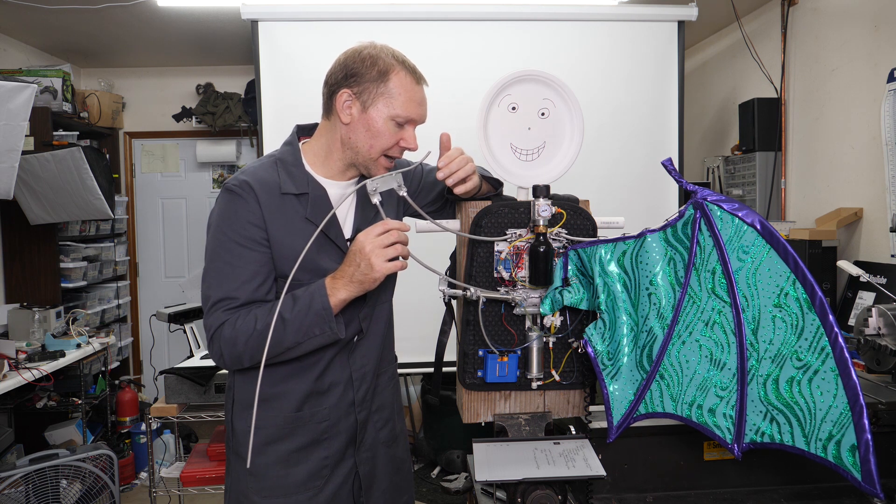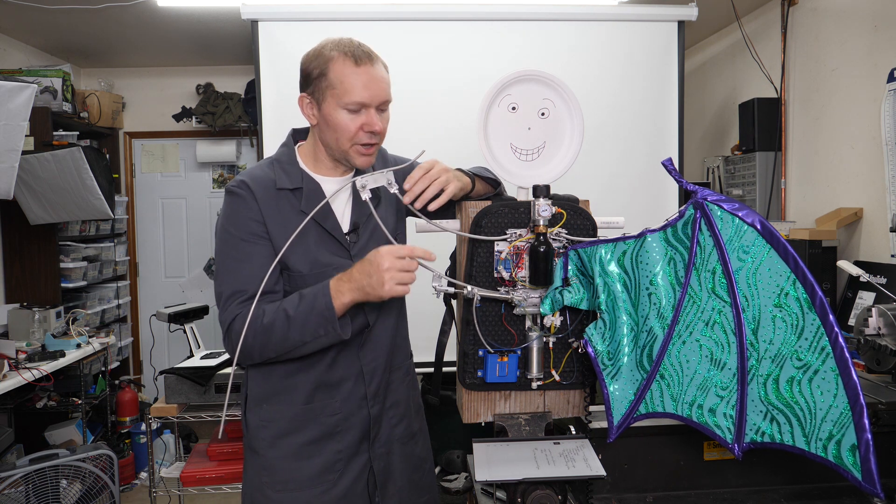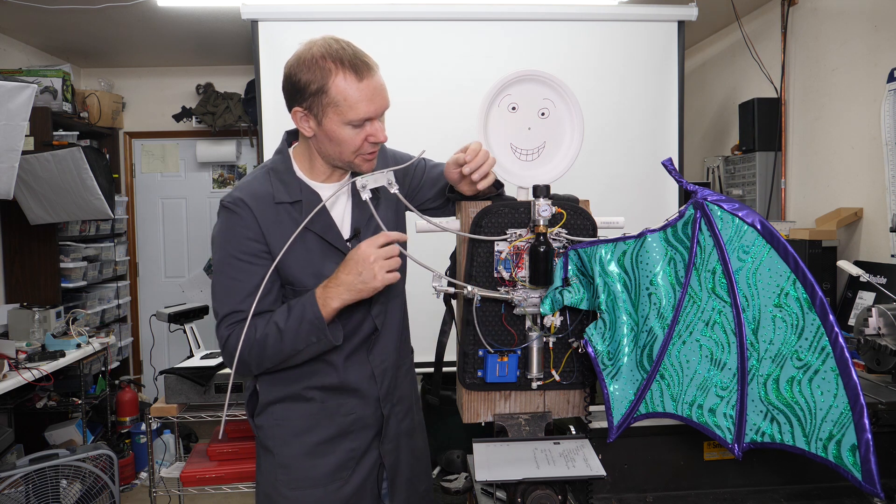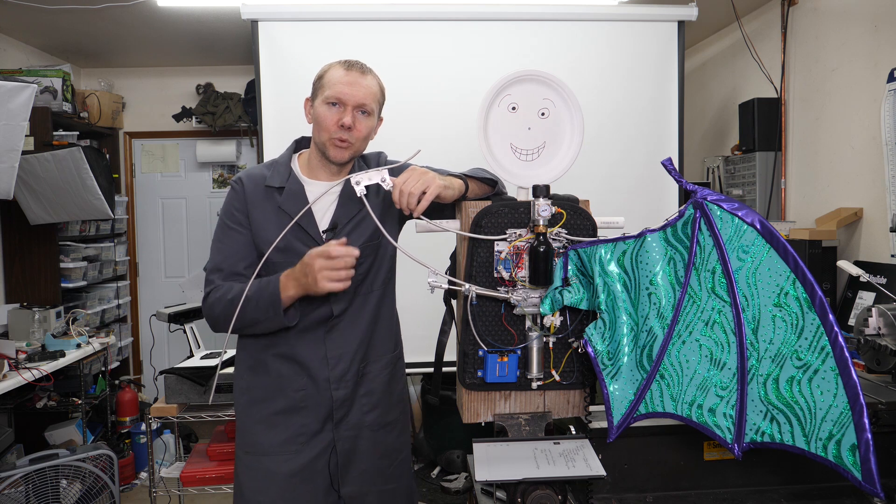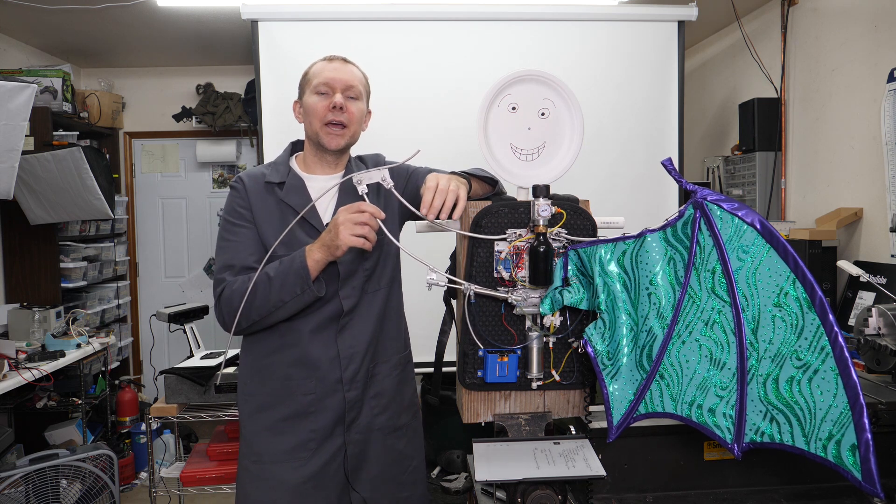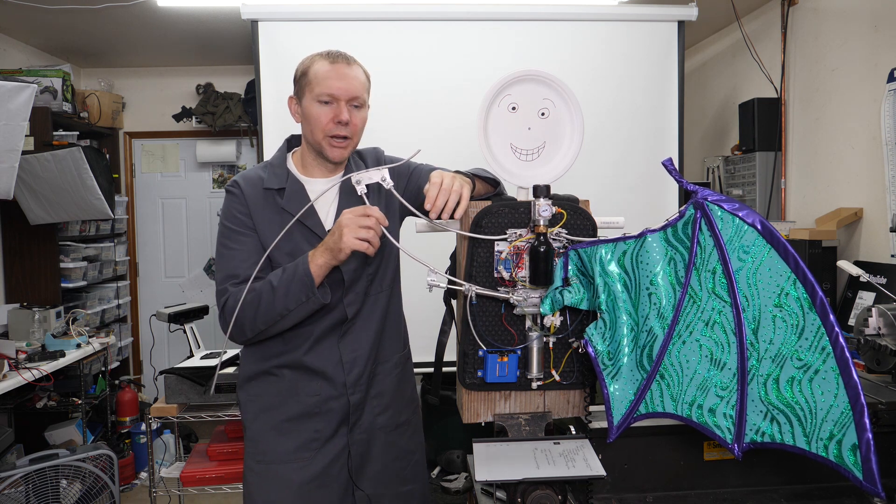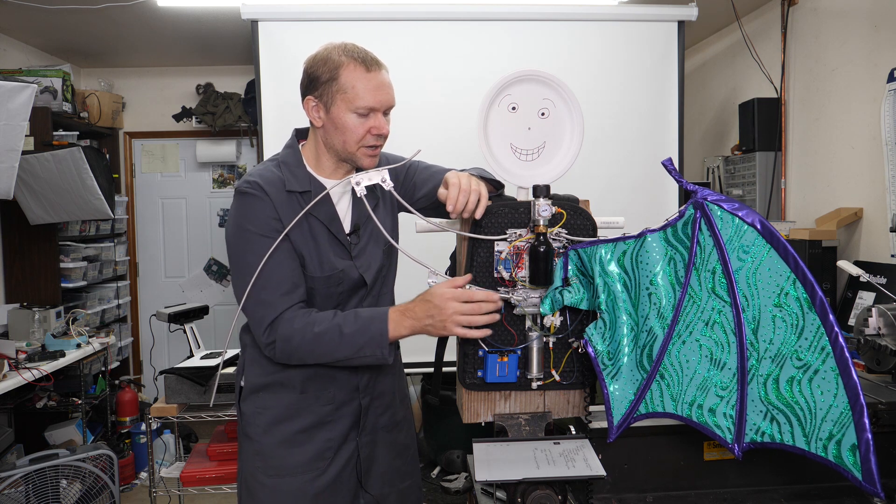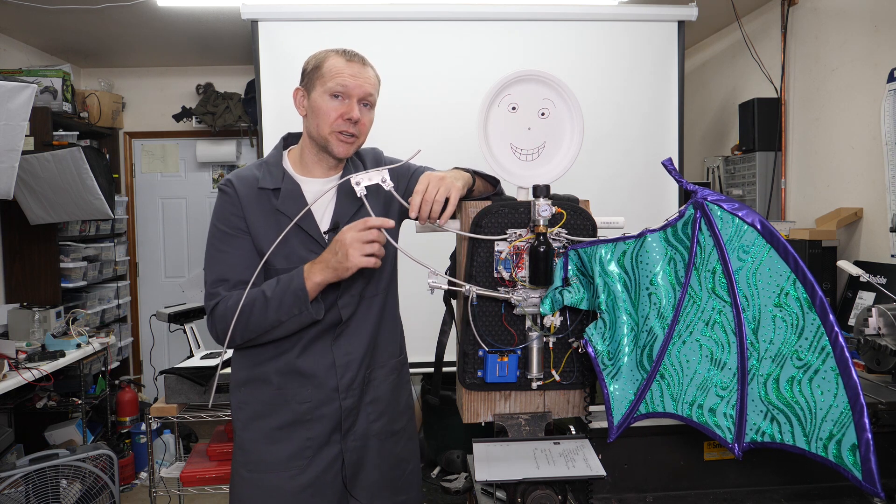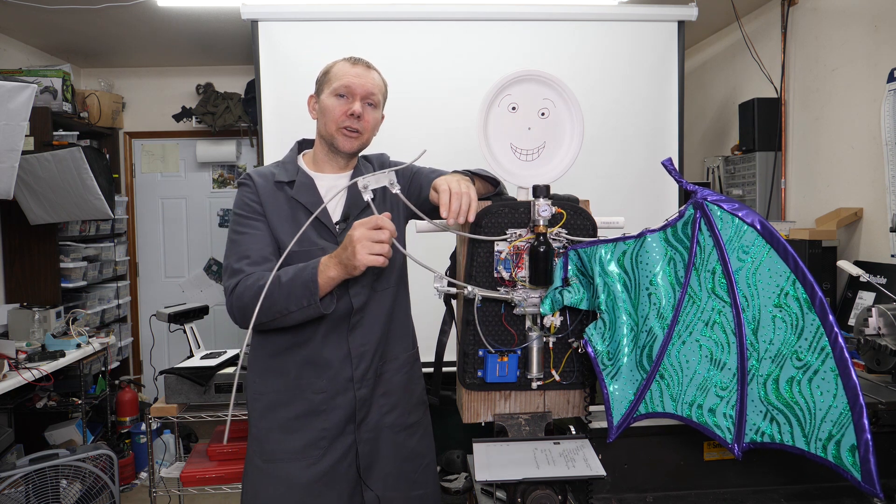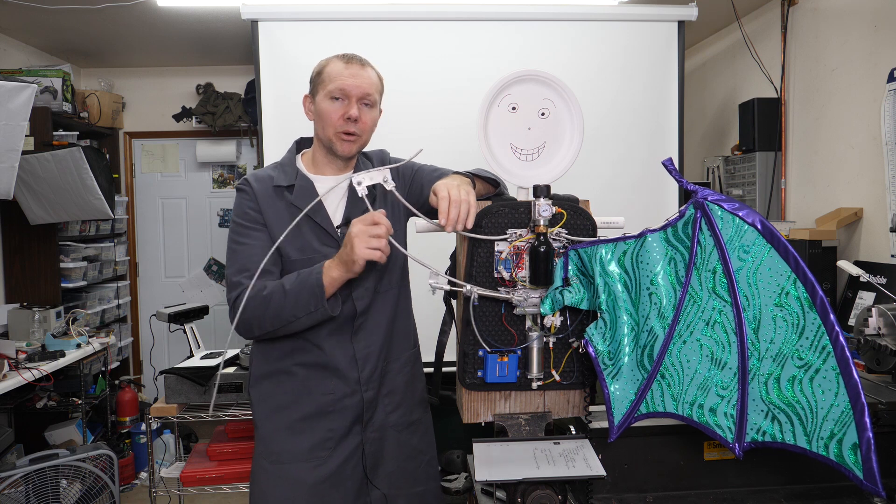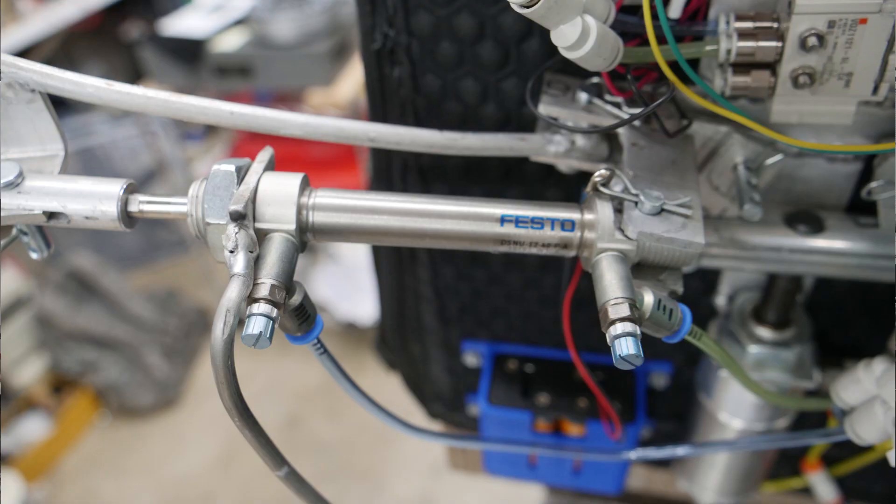Something I did not cover in the video is that the cylinders for the flapping have flow control valves on them. Flow control is a way to slow down or adjust the motion. We could make this thing retract really fast and then go back this way really slowly, or vice versa, just by adjusting these little screws. You can just turn it and watch it go. Super cool stuff.